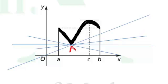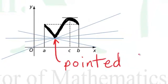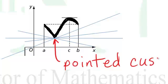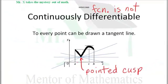So if we have this point, which is sometimes called a cusp, then our function is not continuously differentiable. It's differentiable everywhere except here.